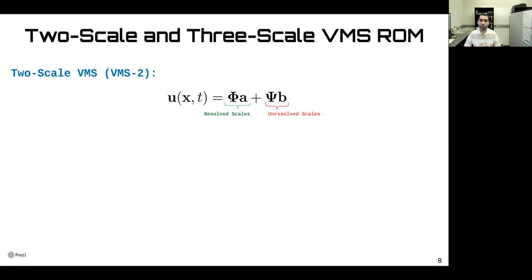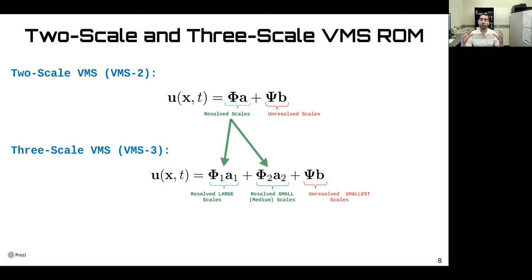Now we present the key advantage of using the VMS methodology. First, we consider the two-scale VMS where we split our modes into resolved scales and unresolved scales. Then we approximate the interactions between these two scales. This is basically what most people have been doing in the ROM closure community. We extend this to the three-scale VMS where we split our resolved scales into resolved large scales and resolved small or medium scales. Finally, we have these unresolved smallest scales. Now, instead of dealing with interactions between phi and psi as one component, we have more flexibility in defining the interactions between phi1 and phi2, phi1 and psi. So we can have multiple closure models that work together or coordinate together to improve the predictions.